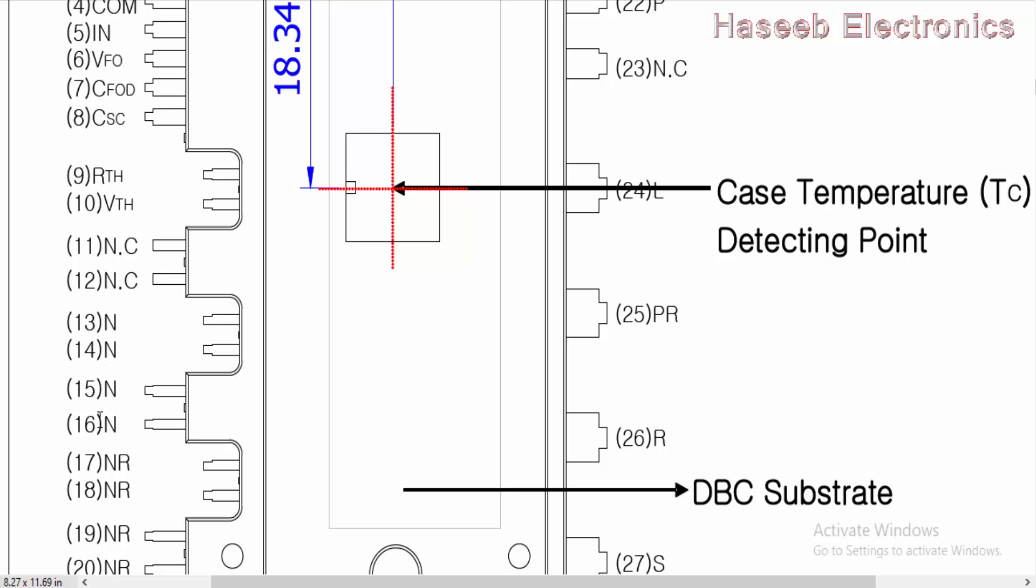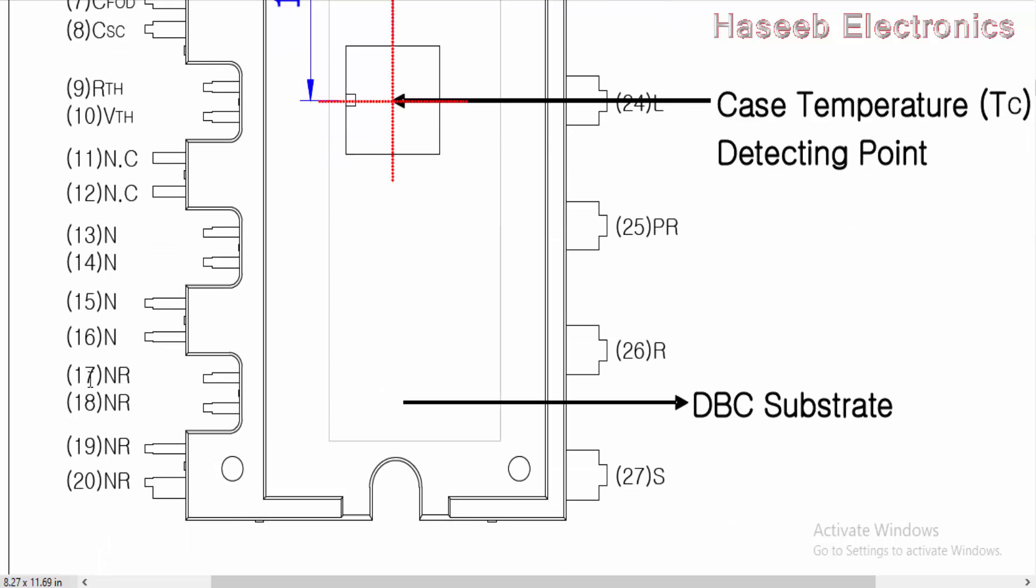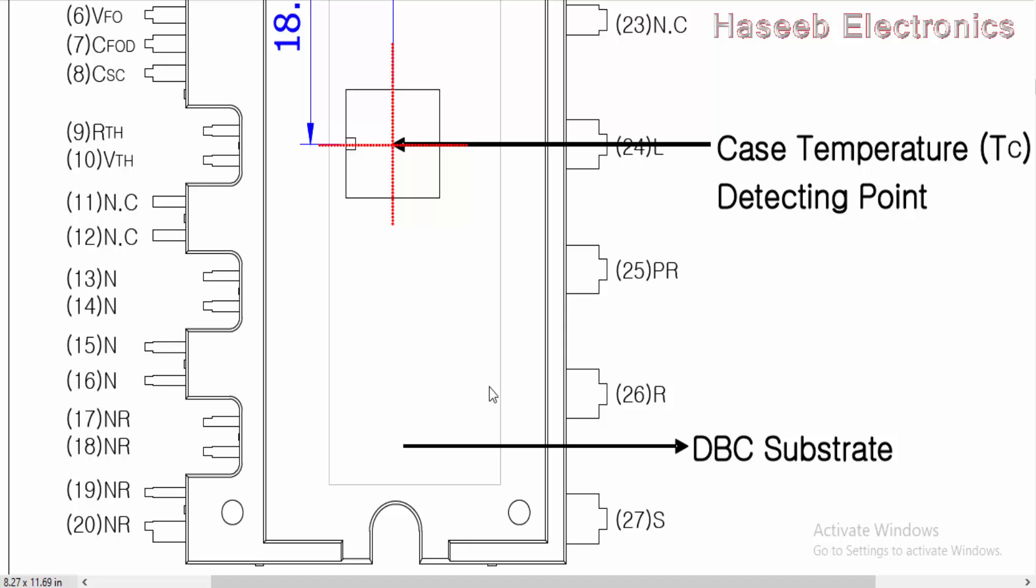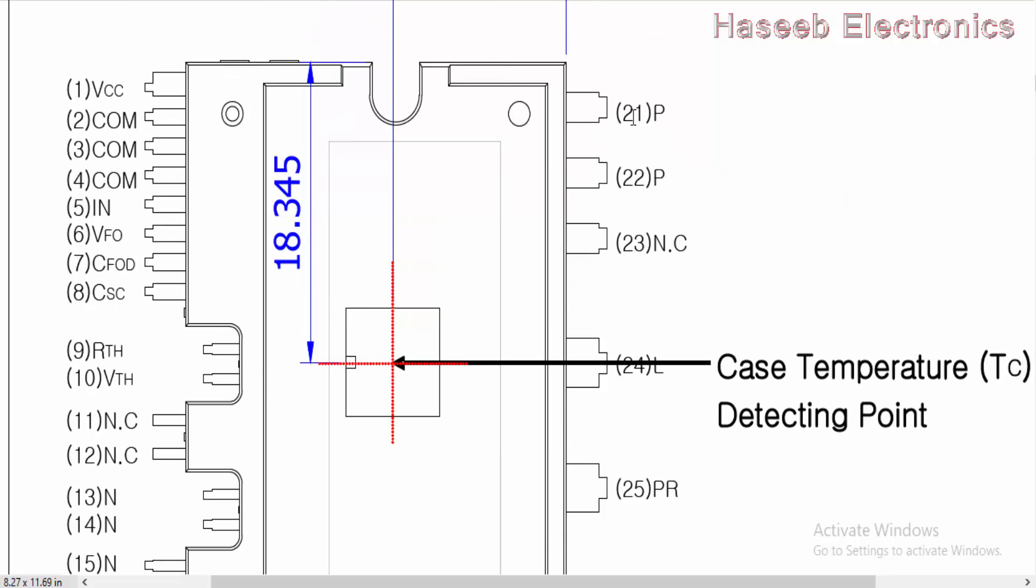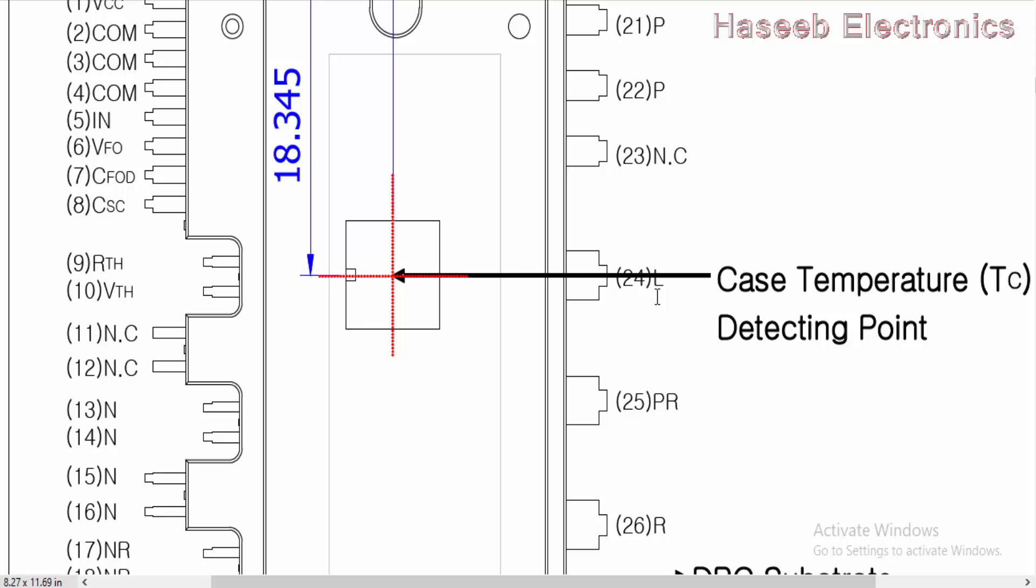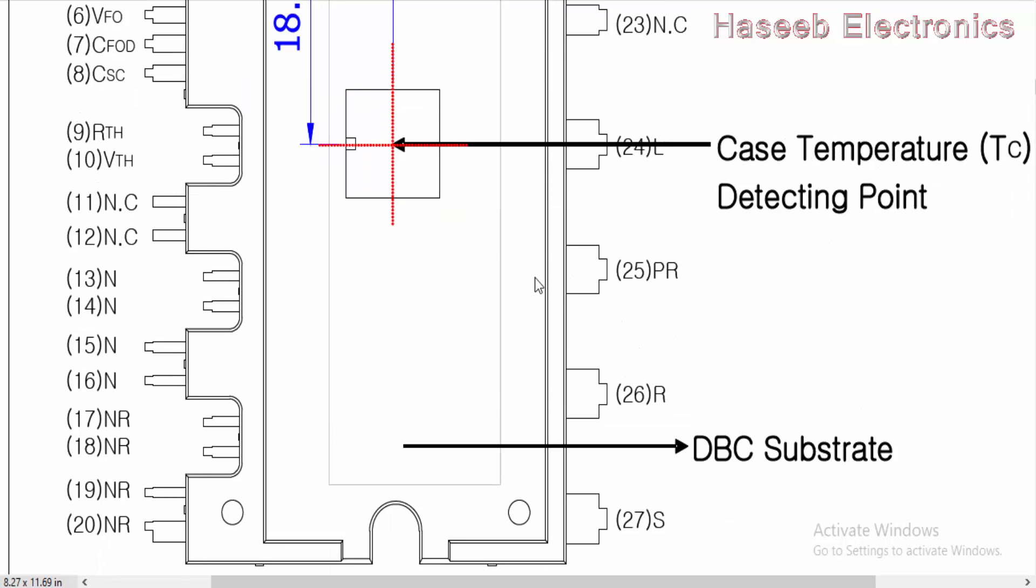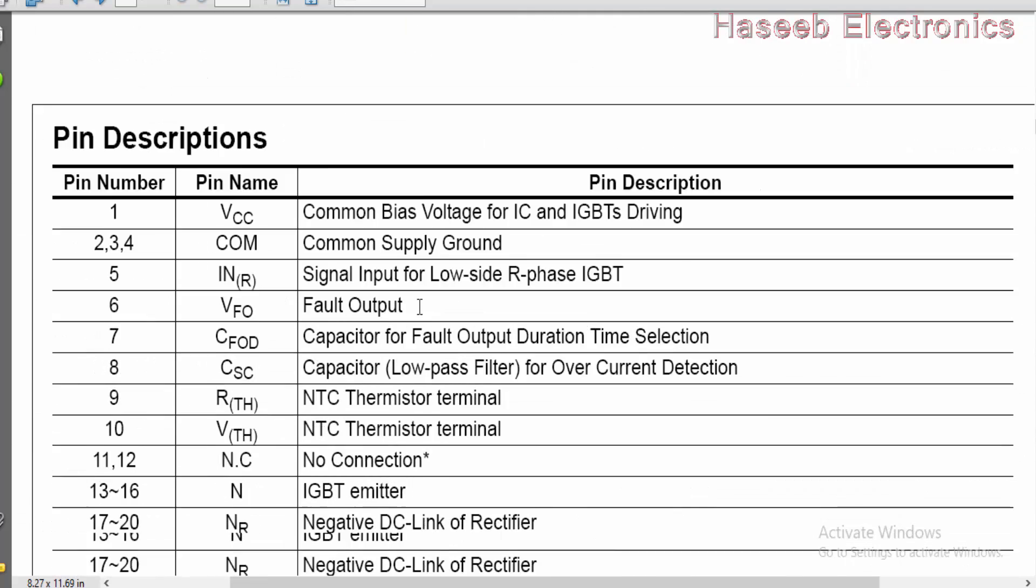Pin number 13, 14, 15 and 16. These four pins are the emitter pins of internal IGBT. Then we have NR pins, negative rail. Actually this module it have a built-in bridge rectifier. So pin number 27 and 26 are AC input pins. The negative output of the bridge rectifier is from pin number 17 to 20. Pin number 21 is the positive output terminal positive link of the boost converter. Pin number 23 is not connected. Pin number 24 is inductor pin. So PFC inductor is connected at pin number 24. Pin number 25 is PR, positive rail.